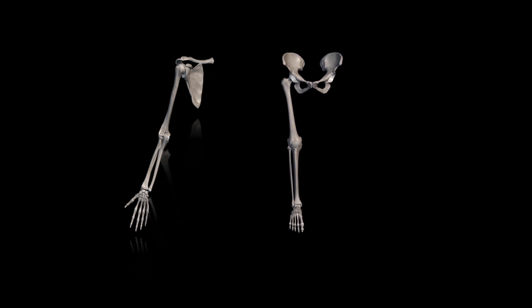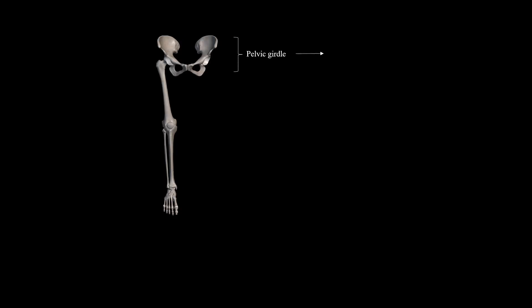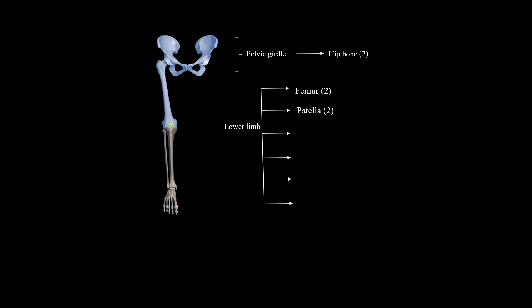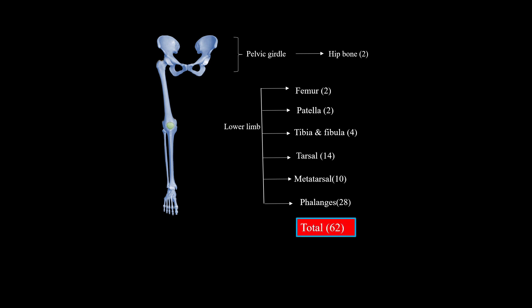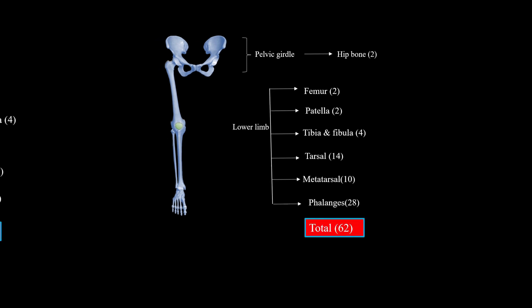Now focus on the bones of the pelvic girdle with lower limb. The pelvic girdle includes the right and left hip bone, and the lower limb includes the femur, patella, tibia and fibula, tarsal, metatarsal, and phalanges. These are 62 bones in the lower limb with pelvic girdle.